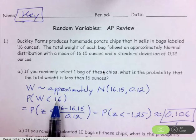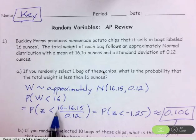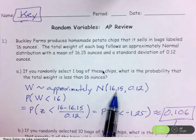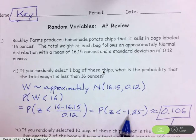So I want the probability that the weight is less than 16 ounces, so I'm going to change that into a z-score by taking that 16, subtracting the mean, dividing by the standard deviation. That will give us a z-score of negative 1.25.